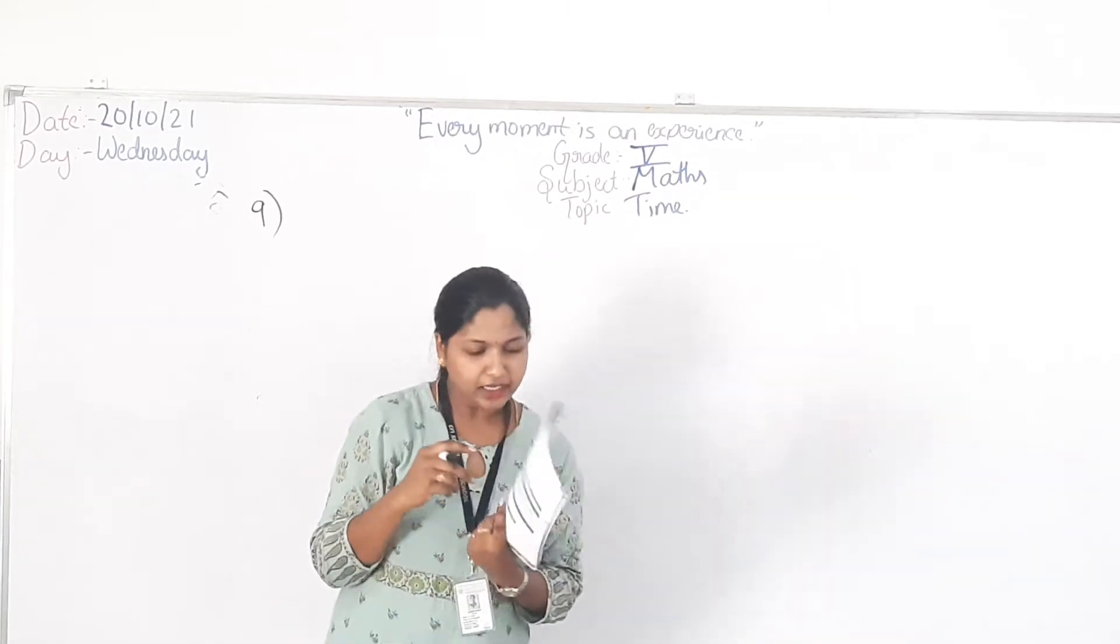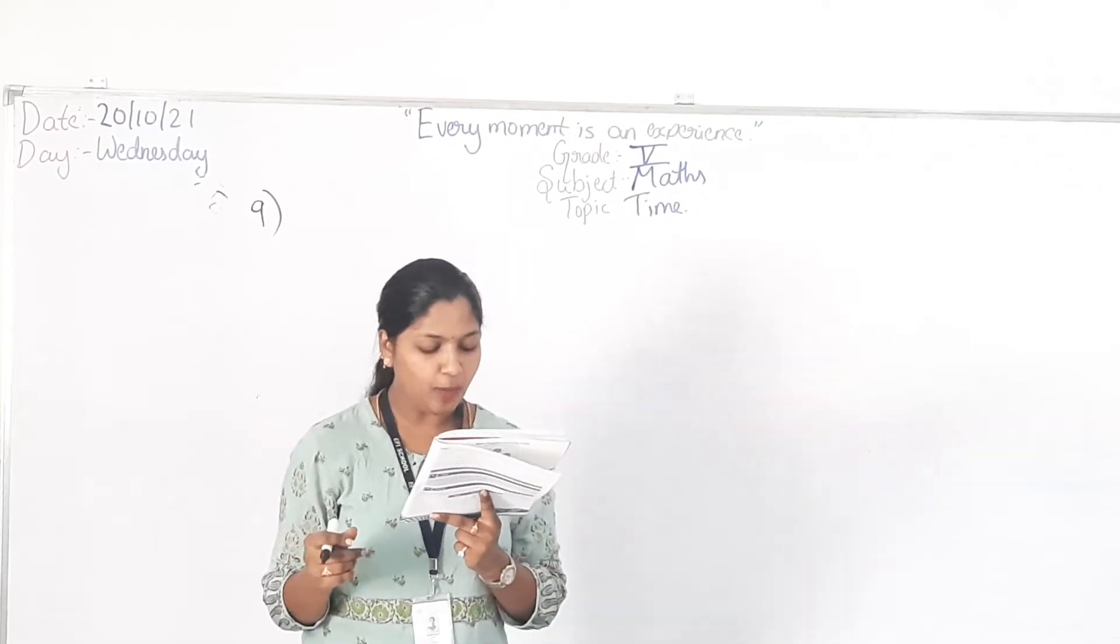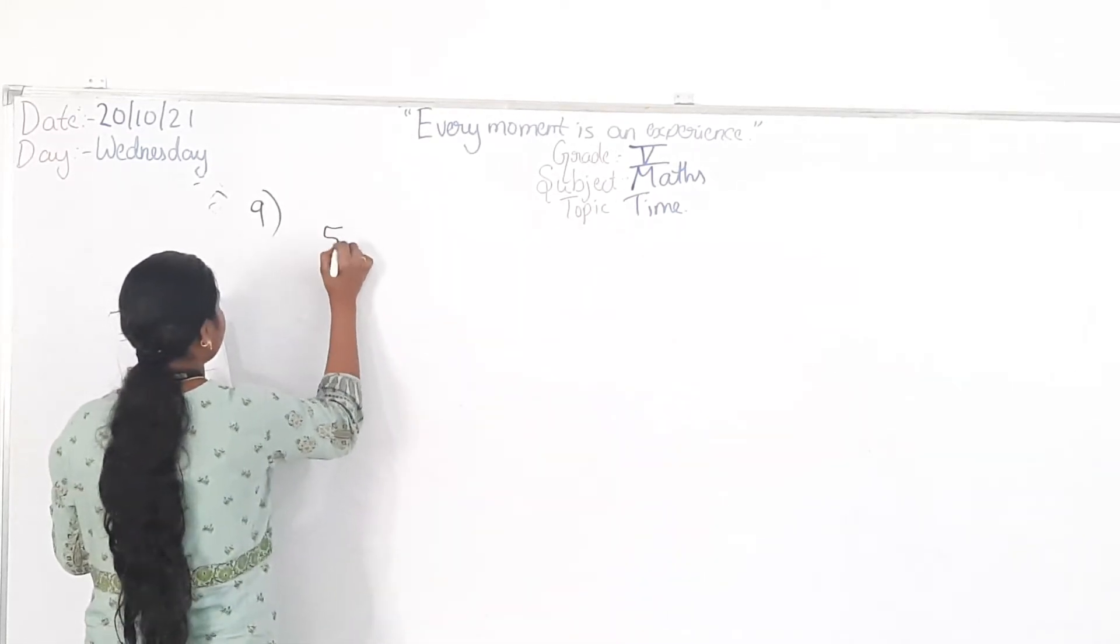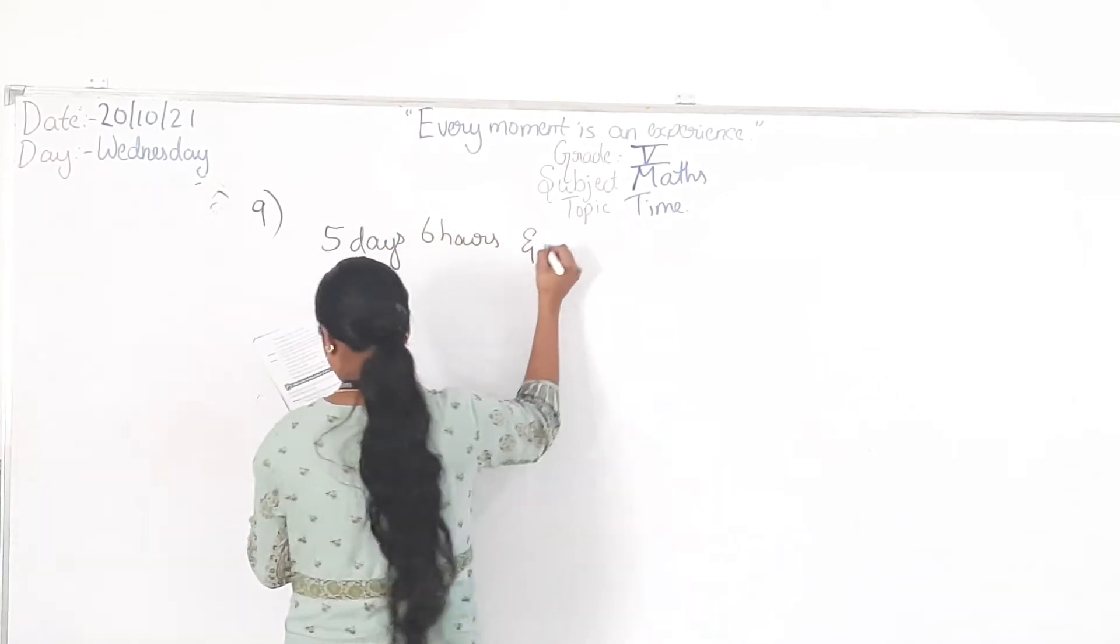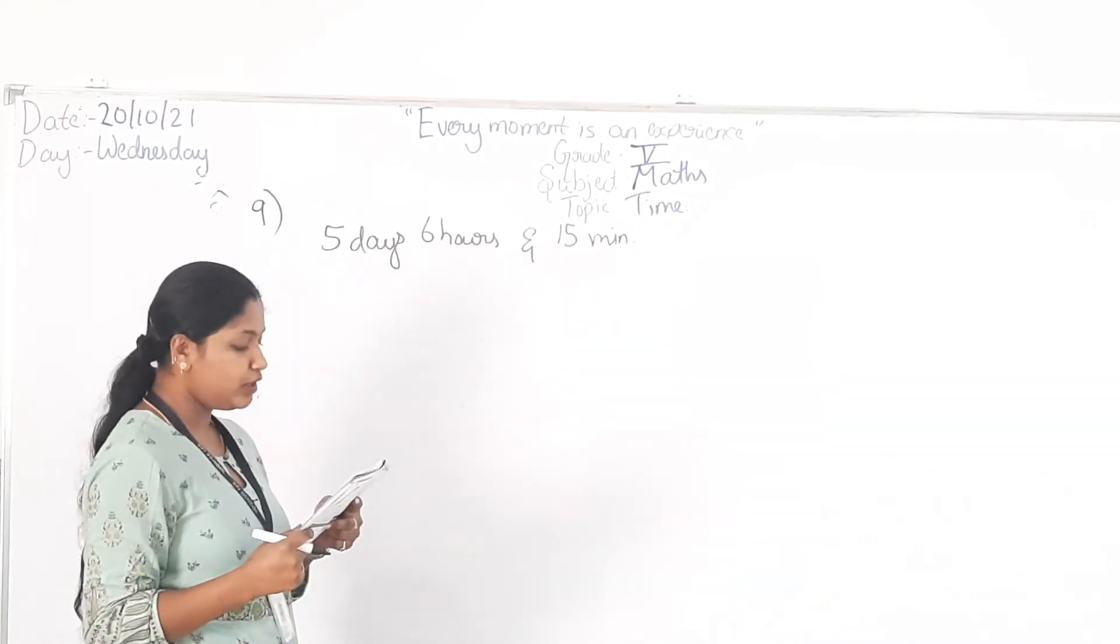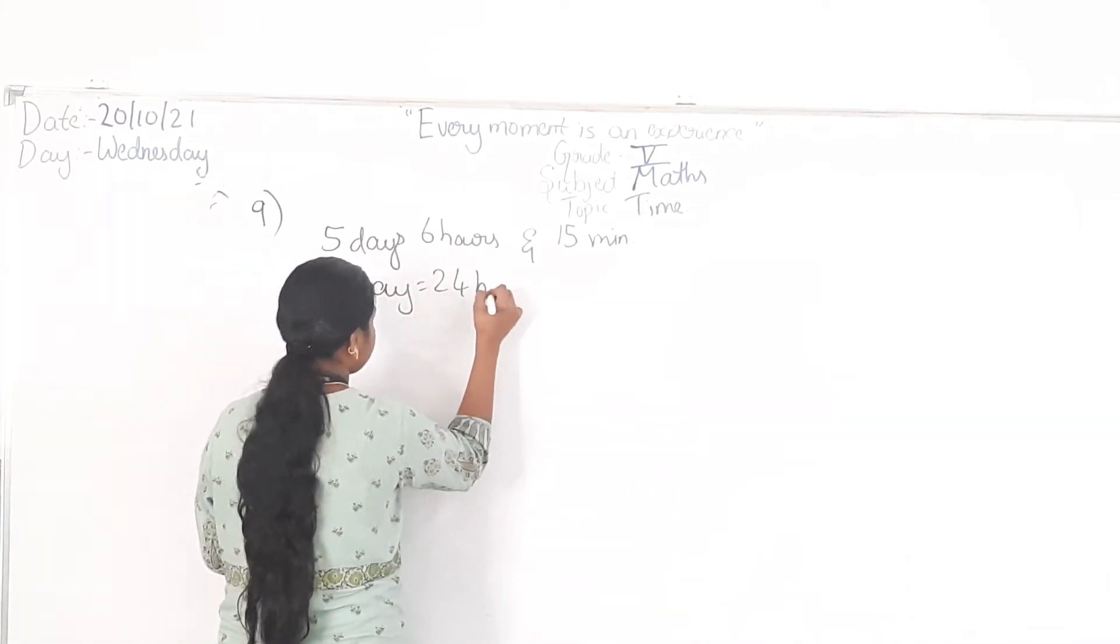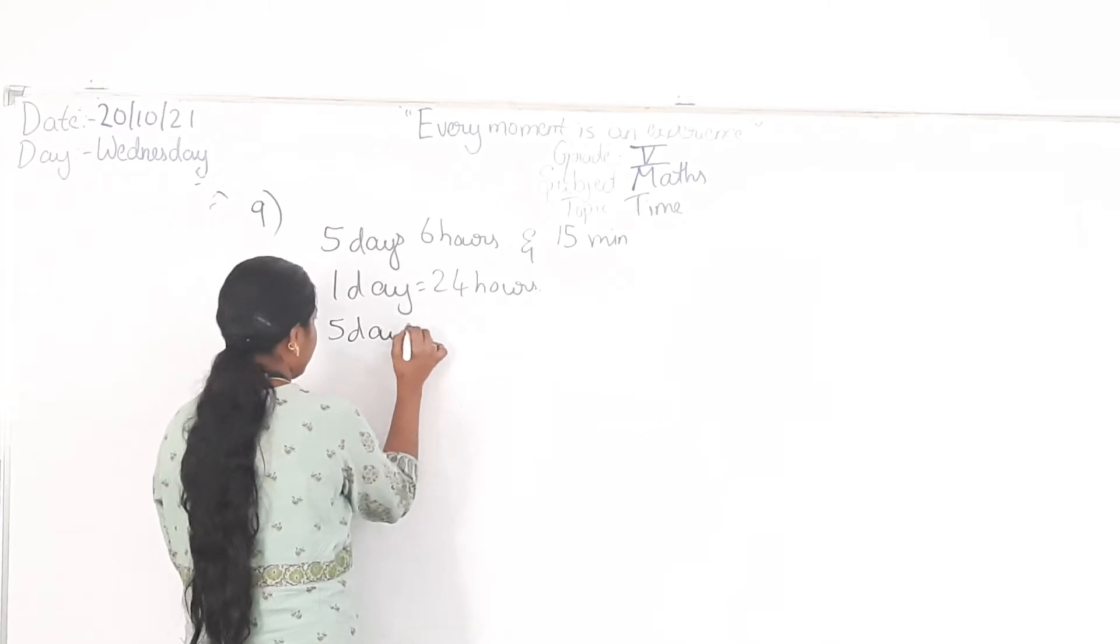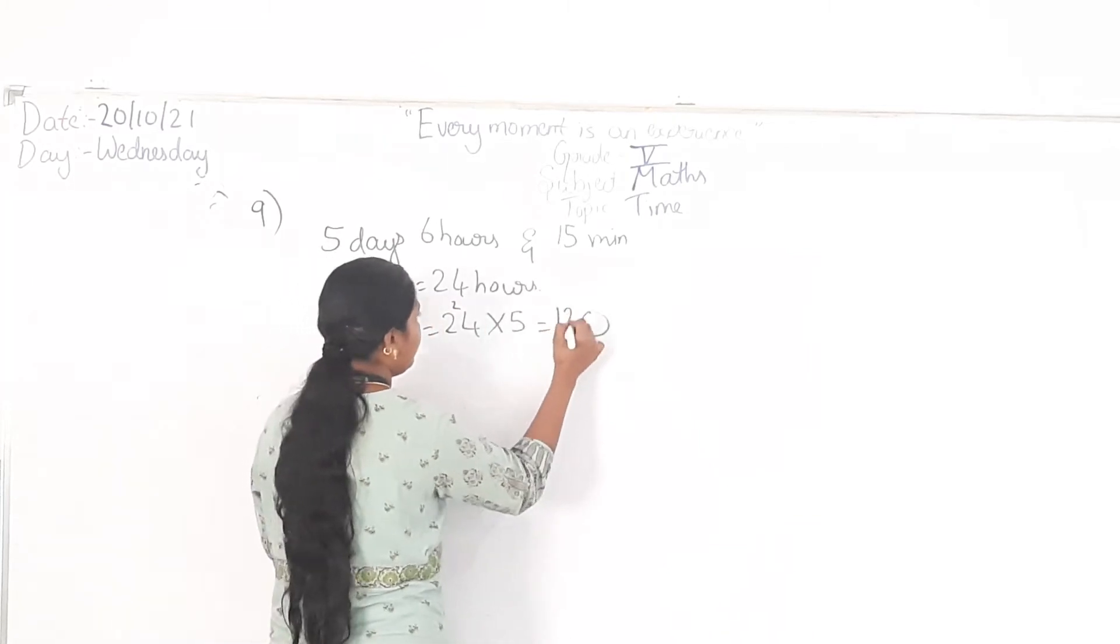Example 9. Sita takes 5 days, 6 hours and 15 minutes to complete a science project. How much time in seconds does she take to complete the project? So what is the time she takes? 5 days, 6 hours and 15 minutes. So you have to convert this into seconds. How will you convert? First convert the days. 1 day equals 24 hours. Therefore,